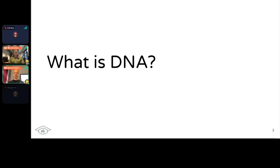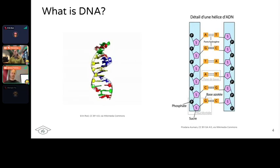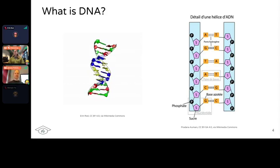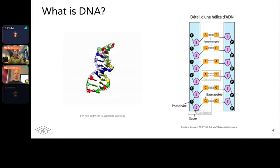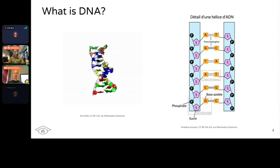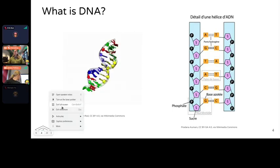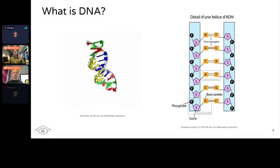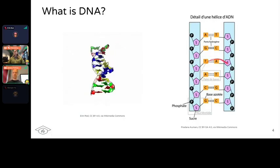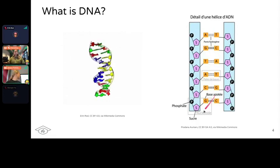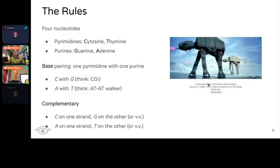So firstly, what is DNA? You're probably all familiar given you're already doing master's and PhDs on this, but to recap: DNA is a double helix molecule which is stuffed into your cells and basically encodes all information for life. When you unwind this DNA double helix, you have two outer strands that hold it together, and inside these two strands, made up of a sugar phosphate backbone, you have four different nucleotides: cytosine, thymine, guanine, and adenine.